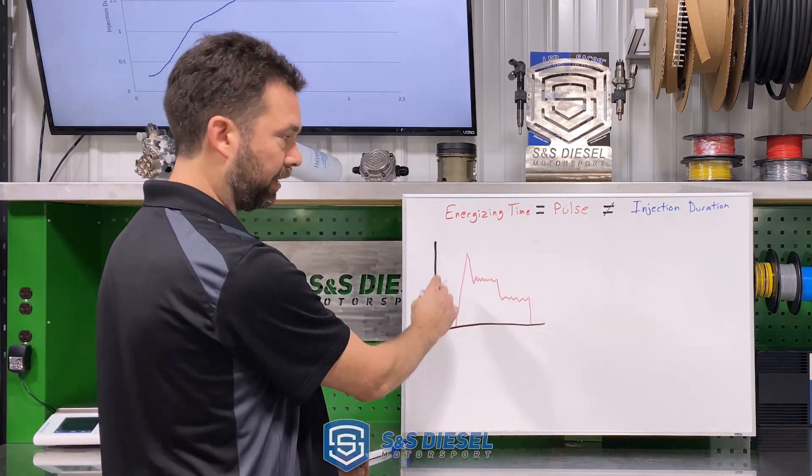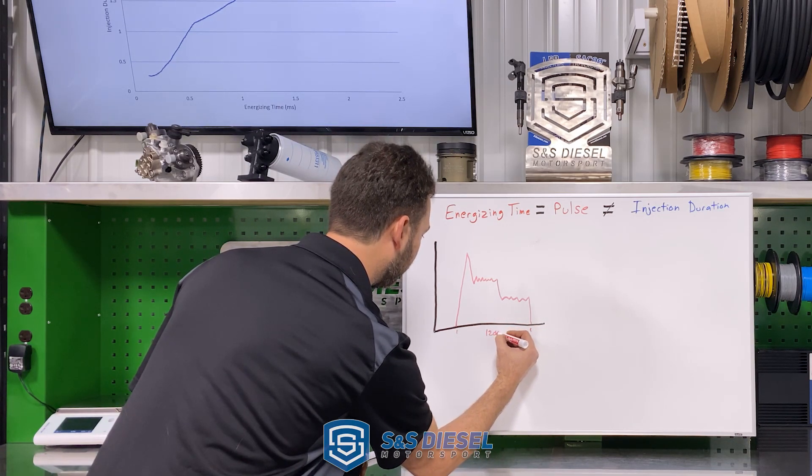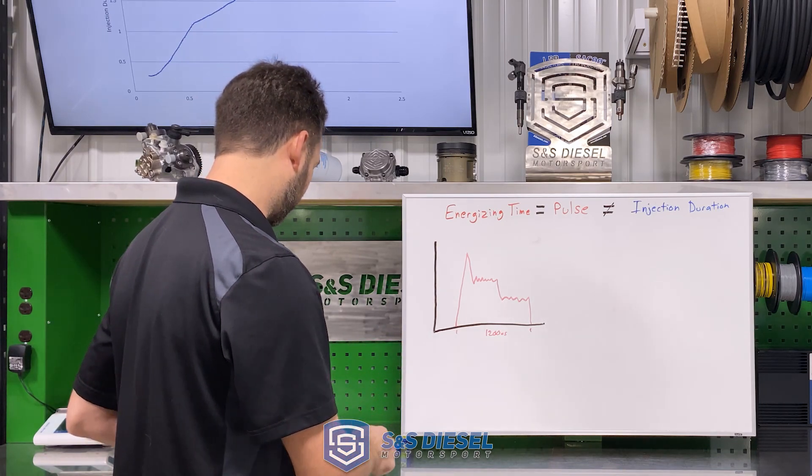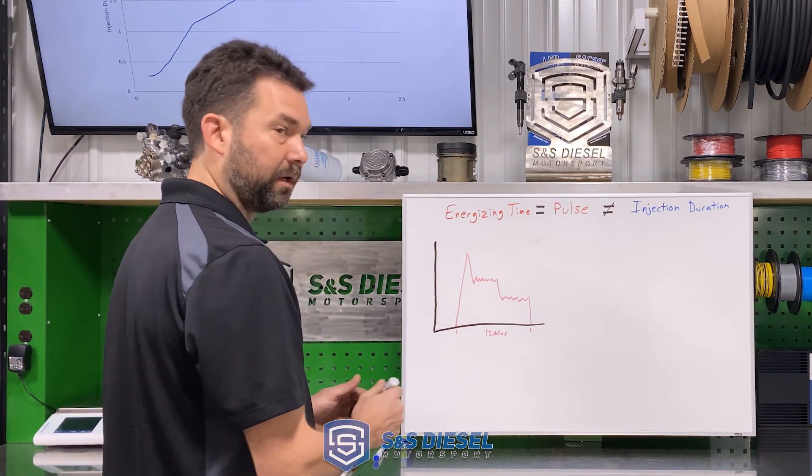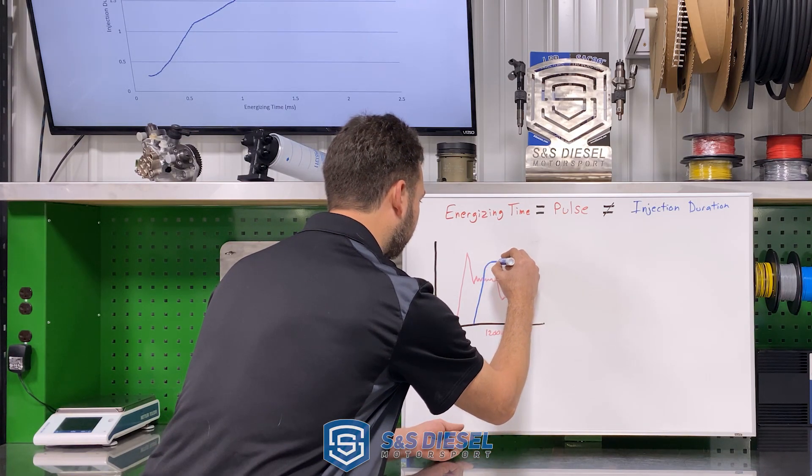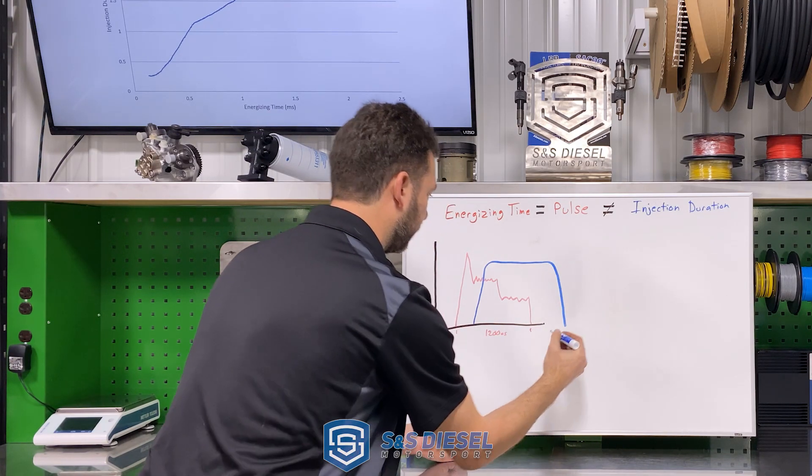So that would be our current trace. Your energizing time here is going to be 1,200 microseconds. That is how long you are firing the injector, how long you are activating the coil. Your actual injection duration, where the fuel is spraying in, is more like that.